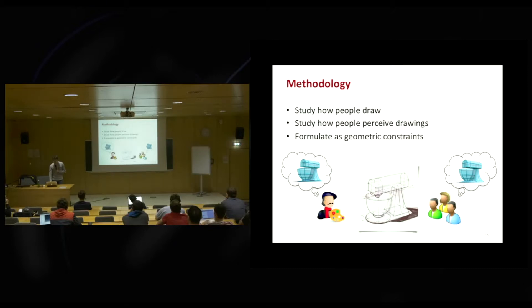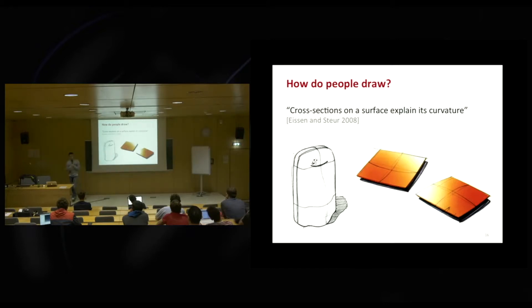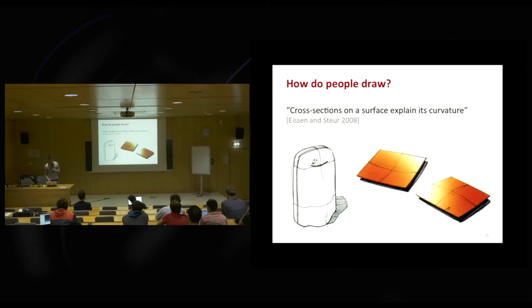Let's take a particular example: a type of line called cross-sections. Those are lines that designers draw to convey curvature, and it's explicitly stated in design books — 'cross-sections on a surface explain its curvature.' The designers use the keyword curvature, which we found interesting.